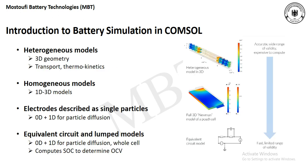In the models available in CompSoul software for battery simulation, we have four different models — from heterogeneous models, which can be used for 3D geometries considering transport and thermokinetic reactions, to equivalent circuit and lump models. From heterogeneous to equivalent circuit and lump models, the cost of computation decreases as well as the range of validity of the simulation.